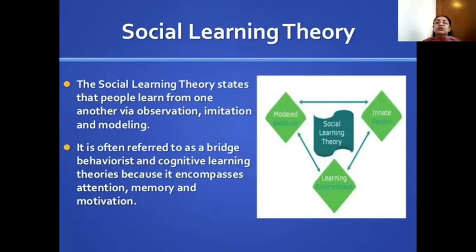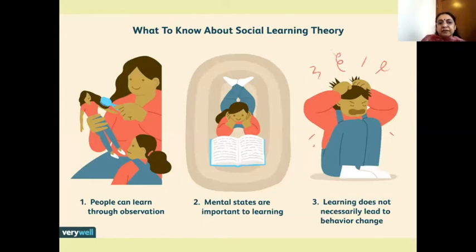Lastly, we are going to talk about social learning theory. The social learning theory states that people learn from one another by observation, by imitation and by modeling their behavior on somebody else's behavior. This is often referred to as a bridge between behaviorist and cognitive learning theories because it encompasses attention, memory and the concept of motivation. People learn through observation. So if they see the mother making their hair, a little girl will go to her doll and try to braid her hair. The second is mental states are important to learning. The more happy and open your mind is, the more you will grasp and understand, which means a positive environment in childhood will be so conducive for a child having good learning. And then lastly, learning does not lead to behavior change. Unfortunately, there is going to be a gap between what I know and how I'm going to behave. So this is not necessarily leading to behavior change.